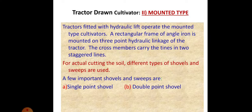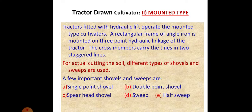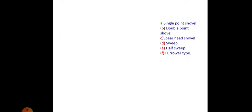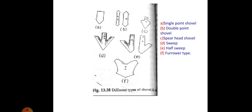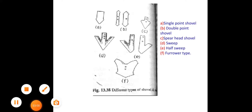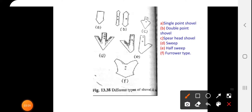The types of shovels include: double shovel, spear head shovel, half sweep, and furrow type. These are the diagrams of the shovel. This is a single point shovel, and this one has two points, which is why it is called a double point shovel.